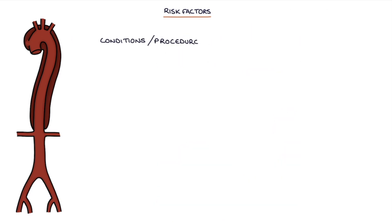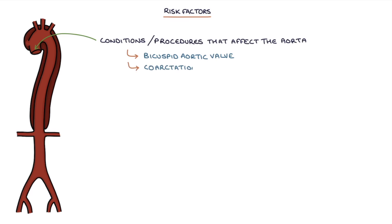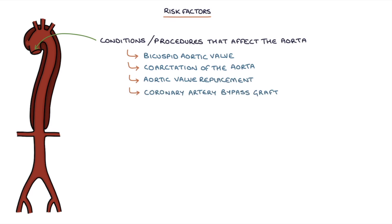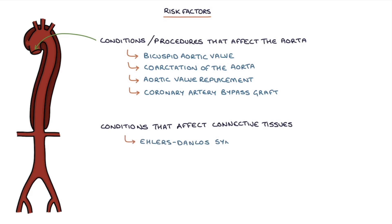Conditions or procedures that affect the aorta can increase the risk of dissection, such as bicuspid aortic valve, coarctation of the aorta, aortic valve replacement, or coronary artery bypass grafts. Conditions that affect the connective tissues can also increase the risk of dissection, notably Ehlers-Danlos syndrome and Marfan syndrome.